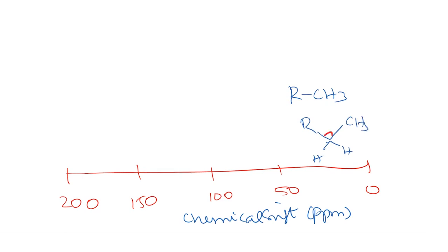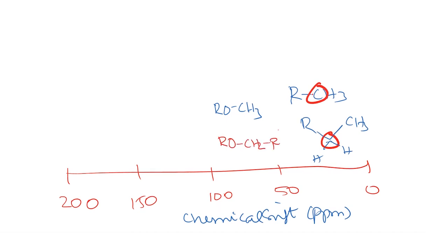These saturated carbon types show up between 0 and 50 ppm. Much like in proton NMR, where the region between 3 and 4.5 ppm corresponds to carbons next to electronegative atoms, in carbon NMR the region between 50 and 100 ppm is for carbons with electronegative atoms such as ethers (R-O-CH2-R'). Interestingly, both olefins and aromatic compounds show up in the same range between 100 and 150 ppm.